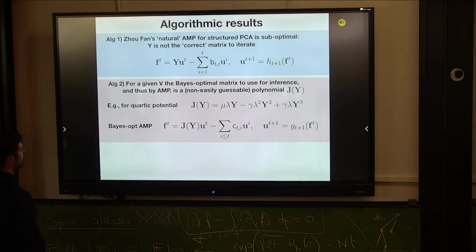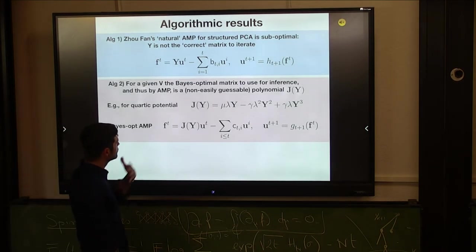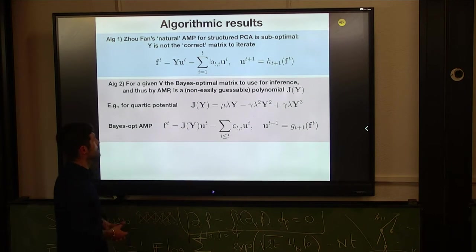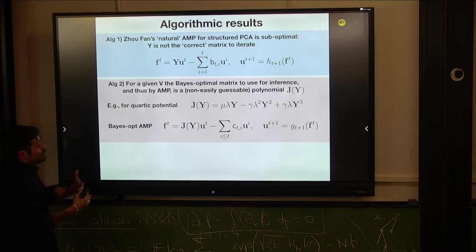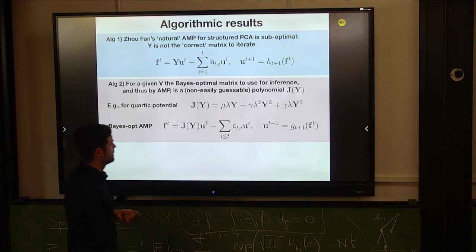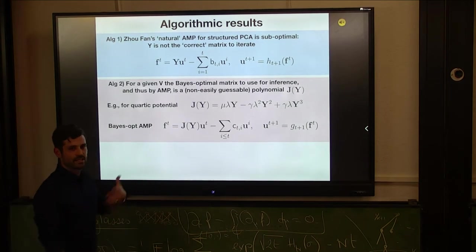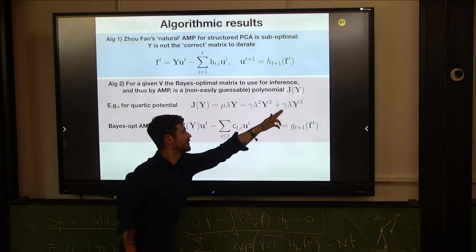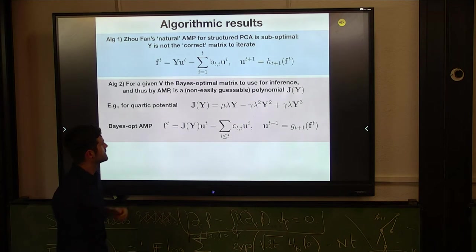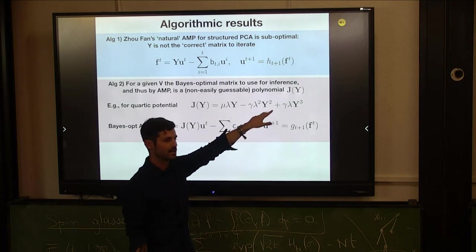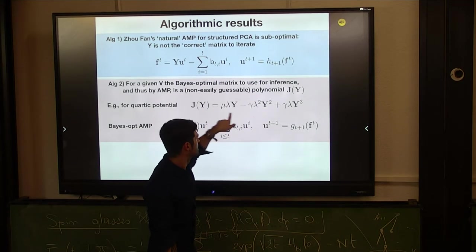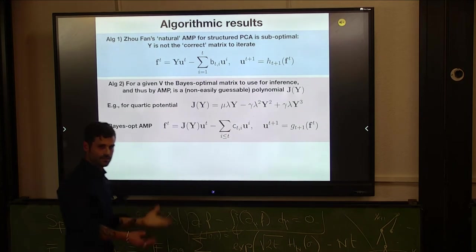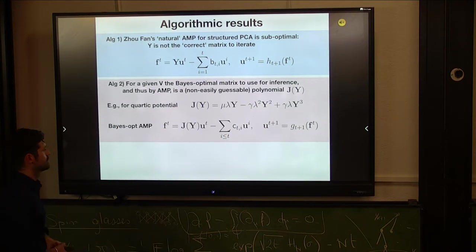And what we claim is that Y here, the data, is not the correct matrix to use. What we show instead is that for a given potential, for a given statistics of the noise, in the Bayesian optimal setting, to perform Bayesian optimal inference, and therefore what you should use also in AMP, is actually a certain specific polynomial function of this data, which is not trivially guessable from the potential. It's not that I can tell you just looking at the potential what are the coefficients in front of this. I know what's the order of this polynomial, but we didn't yet understand the structure allowing to get the coefficients right away.